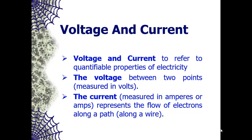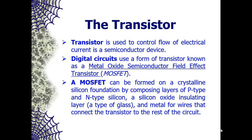We cannot understand digital logic without knowing about voltage and current, and understanding how electricity flows through different mediums. Now, a key element is the transistor. A transistor is a semiconductor device used to control the flow of electrical current. At the lowest level, all digital systems are composed of transistors.